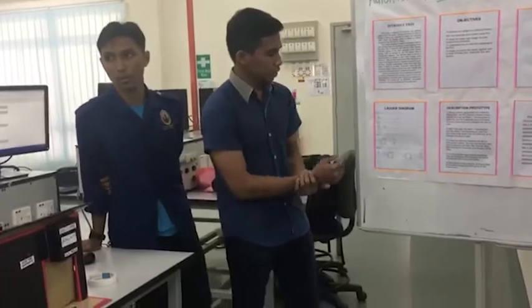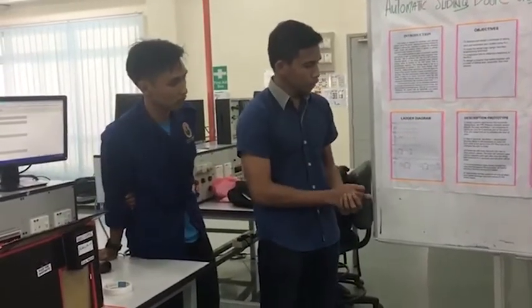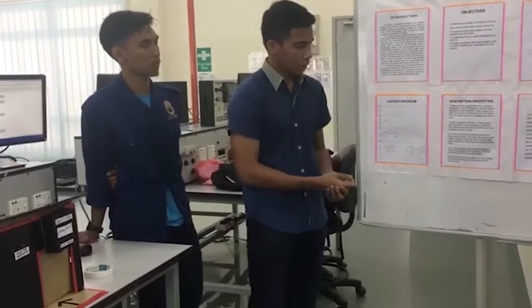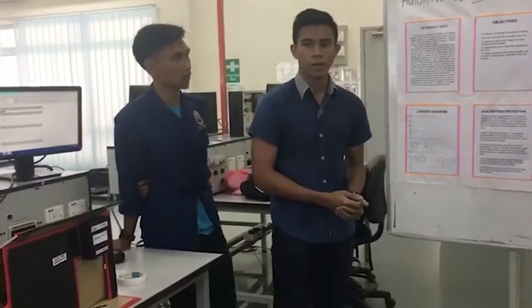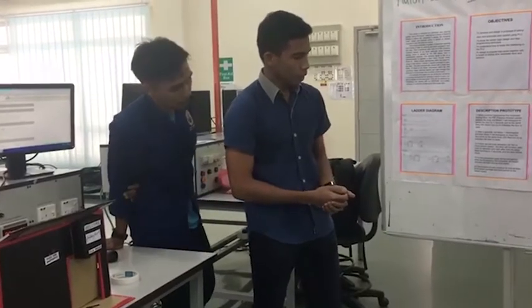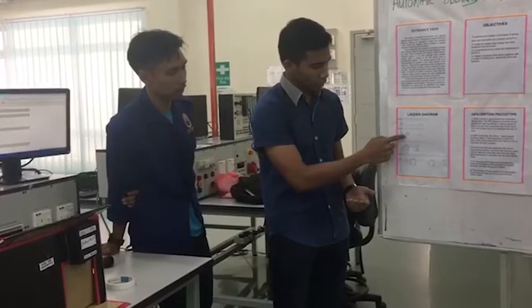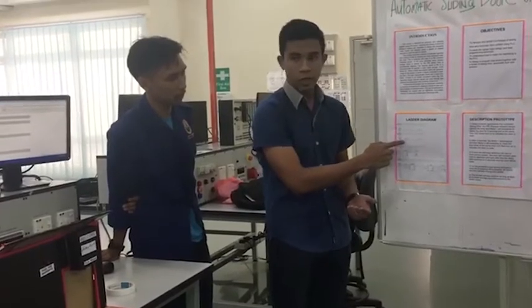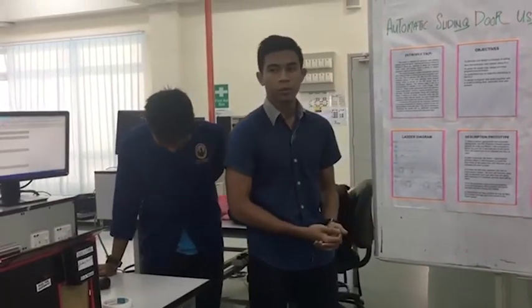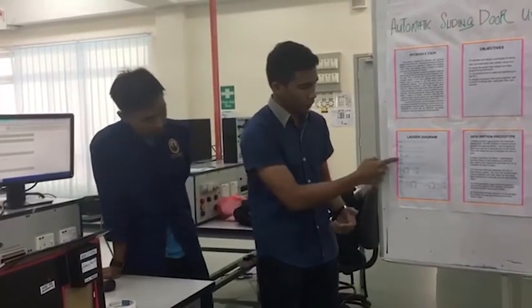For the first network, the input is the infrared sensor and the motor is set to memory. For the memory, we use M2.0. For the motor, we have two inputs for the sensor. For memory, we also use M2.0. We put the lighting here.